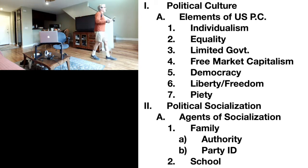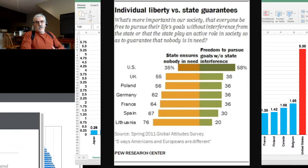The second type of equality is equality of results. Equality of results is the belief that the government should actively reduce income and wealth inequality in a society. So the question becomes, which type of equality do Americans believe in? Do they believe in equality of results? Or do they believe in equality of opportunity?